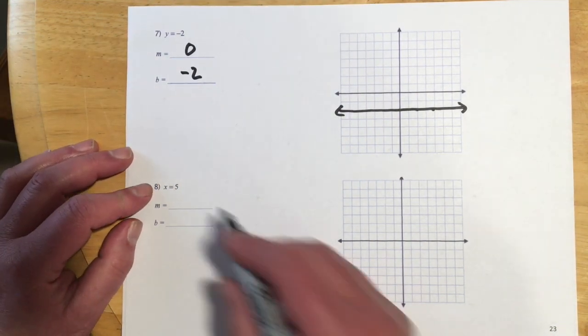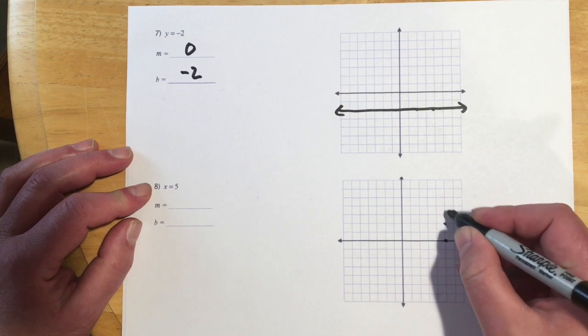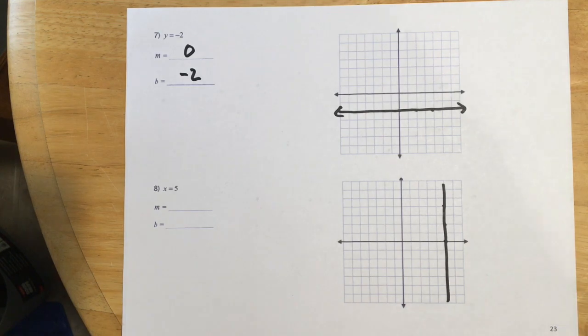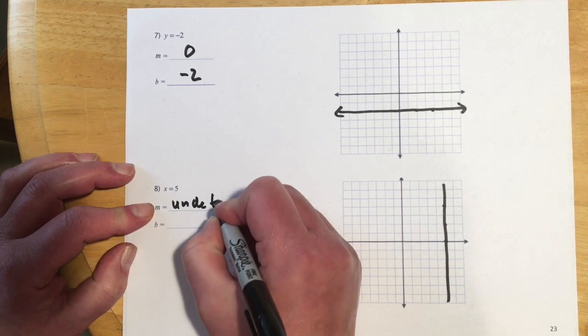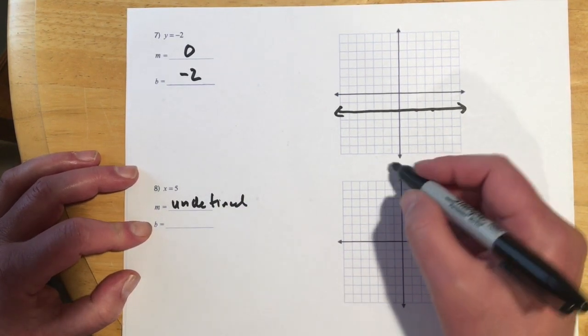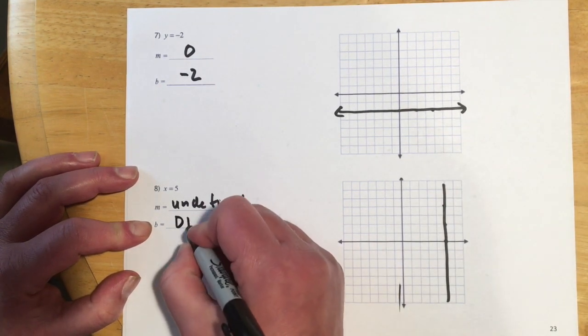For 8, that's x is 5. So that means x is always 5, no matter what y is. So that's our vertical line. And for this one, the slope is undefined. And then the y-intercept doesn't exist, because this is never going to cross the y-axis. So d and e.